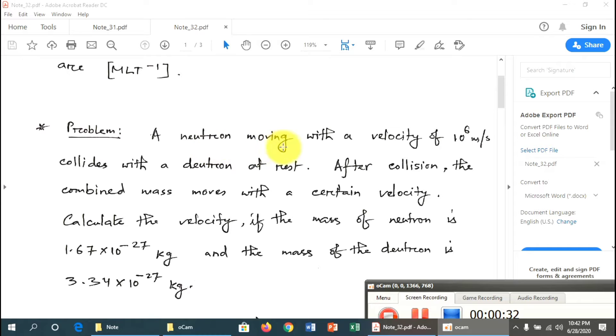This is a neutron moving at 10^6 m/s velocity, colliding with a deuteron at rest. After collision, the combined mass moves with a certain velocity. The mass of the neutron is 1.6 × 10^-27 kg and the mass of the deuteron is 3.34 × 10^-27 kg.